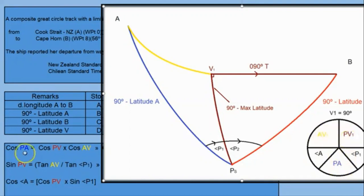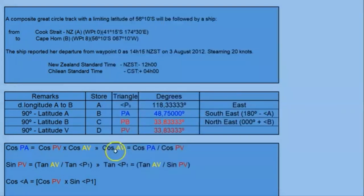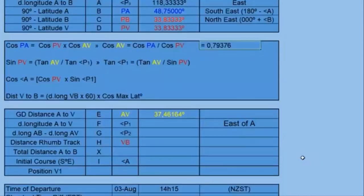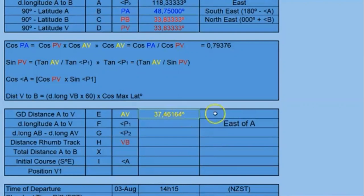Using the cosine formula from Napier's rules, we get PA, and AV — that is our distance. We calculate AV as 37.46 degrees. Since one minute of arc on a great circle equals one nautical mile, we convert to miles. So the distance from A to V is 2247.70 miles.